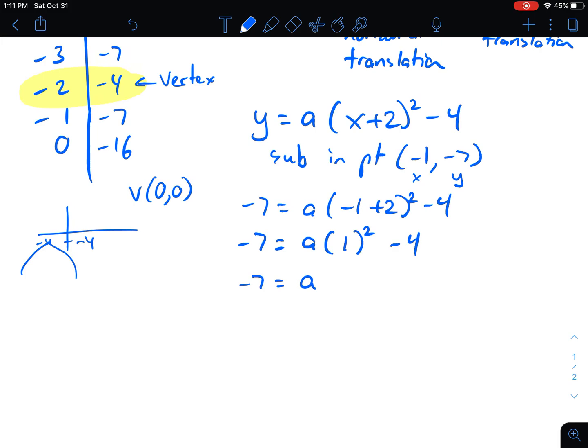1 squared is just 1. So we're going to get negative 7 equals a times 1 is just a. Bring negative 4 to the left side. It becomes positive. And we get negative 3 equals a.